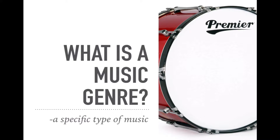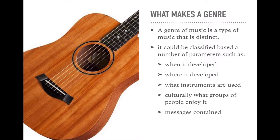We started talking about what is a music genre — of course it's a specific type of music. What makes a genre is that there are a variety of different types of music, and each type has some specific parameters or characteristics: instruments, time periods, origins, or things like that.